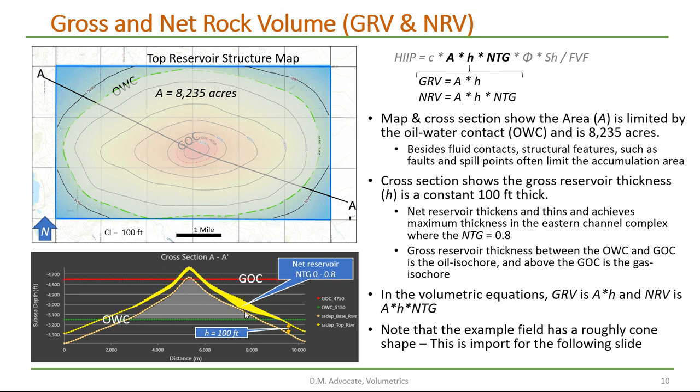The bright yellow in here is our good quality sand that's within the gross reservoir section. In this area here the sand represents 80% of the gross reservoir section. Or we could say our net to gross is 0.8.